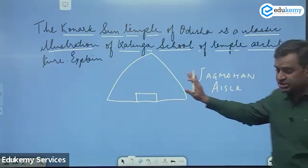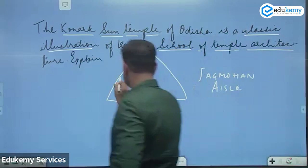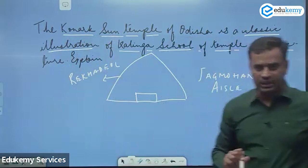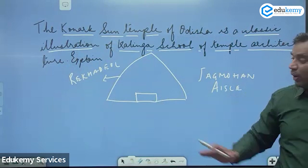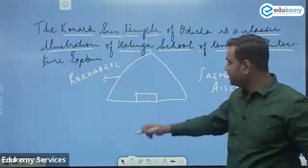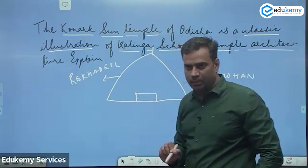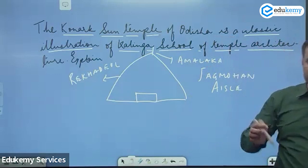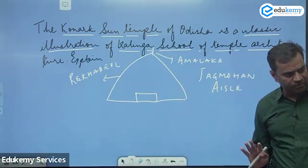The shikhar in Kalinga style is very elongated and decorated. For this, there is a separate technical term: rekha deval, or simply deval. The term rekha deval is used instead of shikhar because it is highly decorated and ornate. Above the rekha deval, there is always a pillar-like pinnacle on top, known as the amalak. The amalak is the most important element on top of the rekha deval. These — Jagmohan, aisle, rekha deval, and amalak — are all distinctive features of Kalinga style.